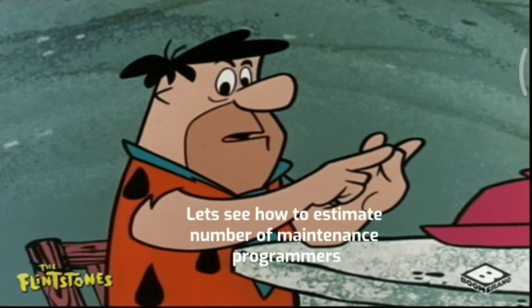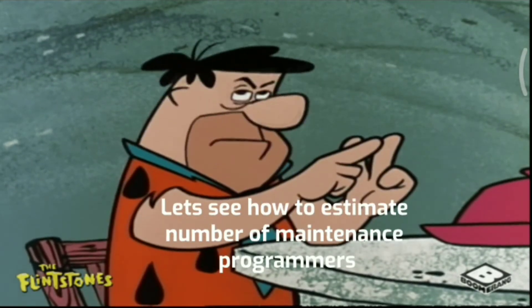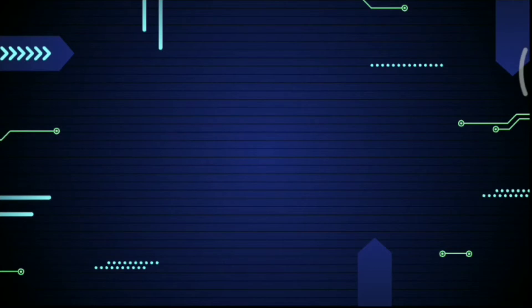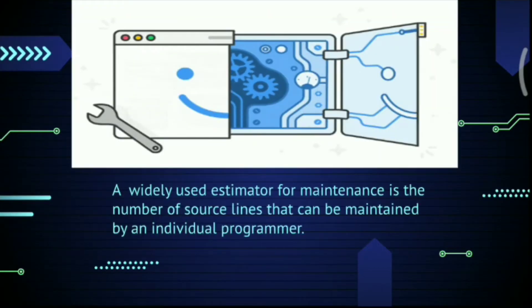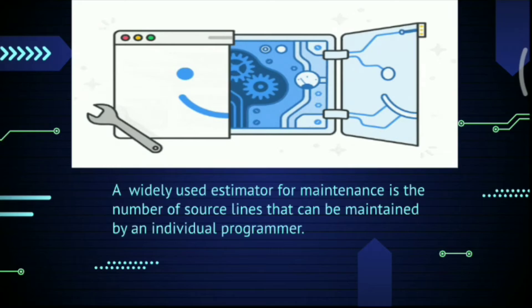Now let's see how to estimate the number of maintenance programmers. A widely used estimator for maintenance is the number of source lines that can be maintained by an individual programmer. An estimate of the number of full-time software personnel needed for maintenance can be determined by dividing the estimated number of source instructions to be maintained by the estimated number of instructions that can be maintained by a maintenance programmer.